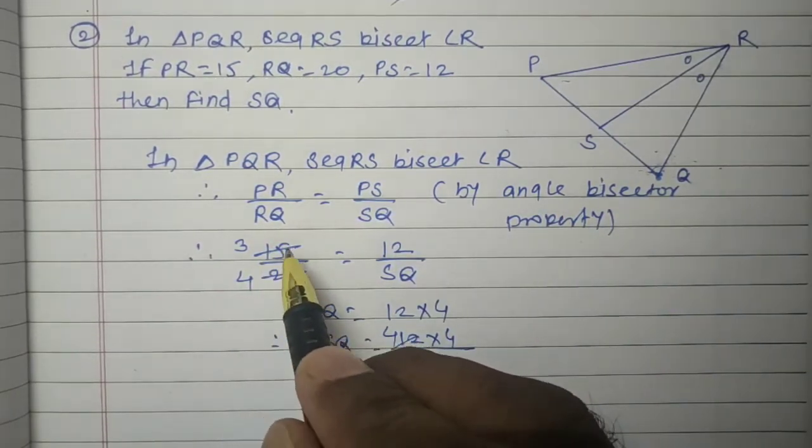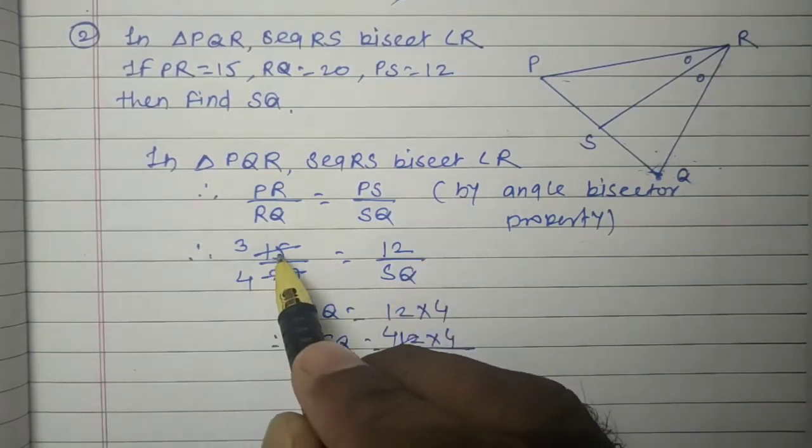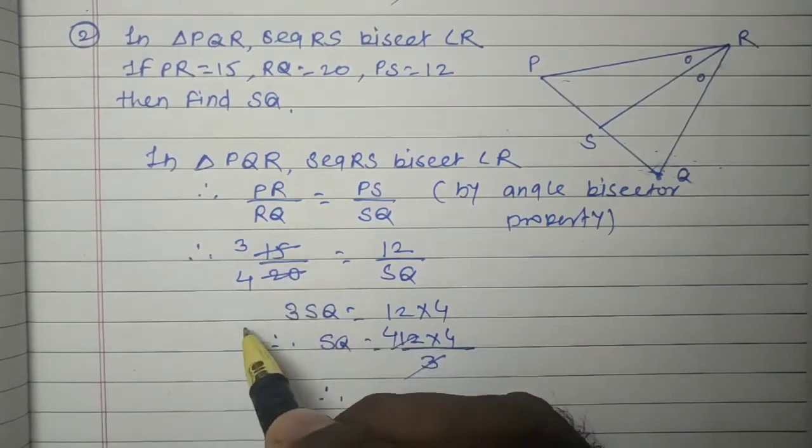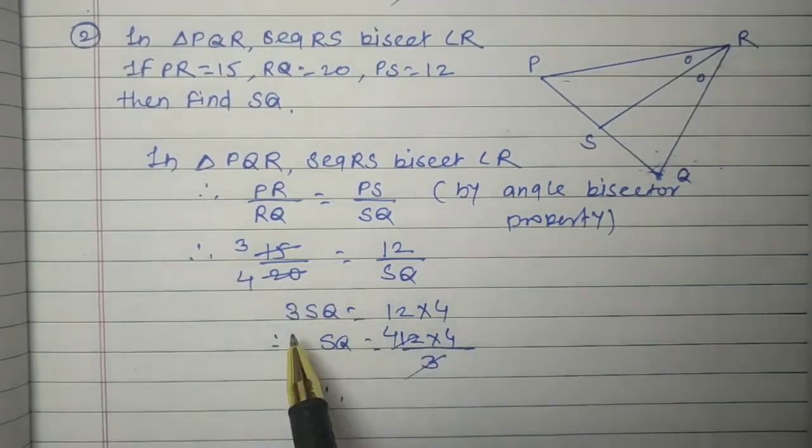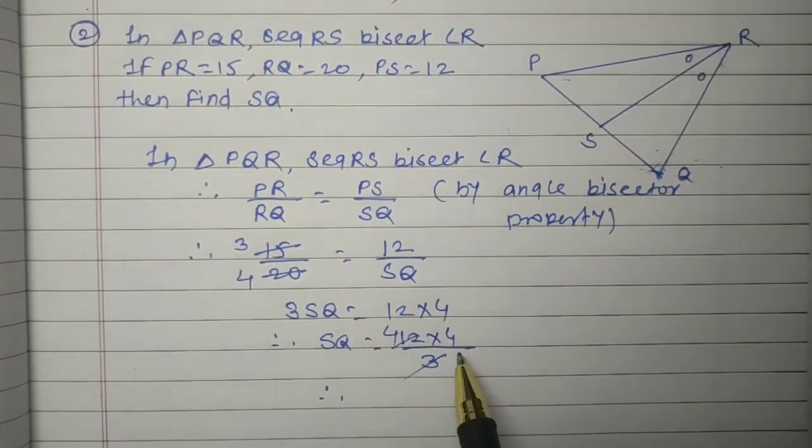Then put the values: PR equals 15, 20, 12, SQ. Then divide by 5: 3 is from 15, 5 fours are 20, so 3 upon 4. Then cross multiplication: 3SQ equals 12 into 4. Therefore, SQ equals 12 into 4 upon 3.